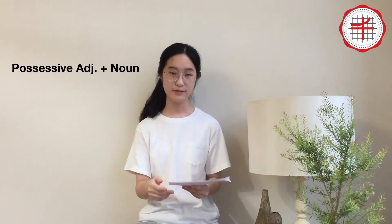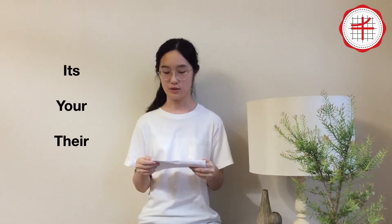The possessive adjective is connected with a noun. We use 'my' to tell that something belongs to me. We use 'his' to say that something belongs to a man. We use 'her' to tell that something belongs to a woman. We use 'its' to say that something belongs to an animal. We use 'your' to tell that something belongs to you, and we use 'our' to tell that something belongs to you and me. We use 'their' to tell that something belongs to them — many people, but not me.